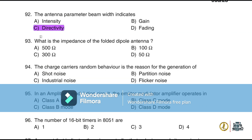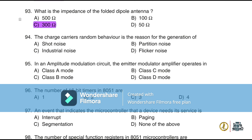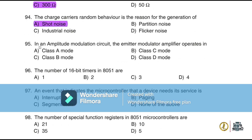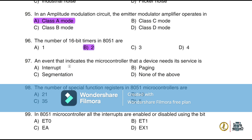Question 91: A PM signal is detected using a low-pass filter. Question 92: The antenna parameter beam width indicates directivity. Question 93: The impedance of a folded dipole antenna is 300 ohms. Question 94: The random behavior of charge carriers is the reason for generation of shot noise. Question 95: In an amplitude modulation circuit, the emitter modulator amplifier operates in class A. Question 96: The number of 16-bit timers in 8051 is two. Question 97: An event that indicates the microcontroller that a device needs its service is an interrupt.